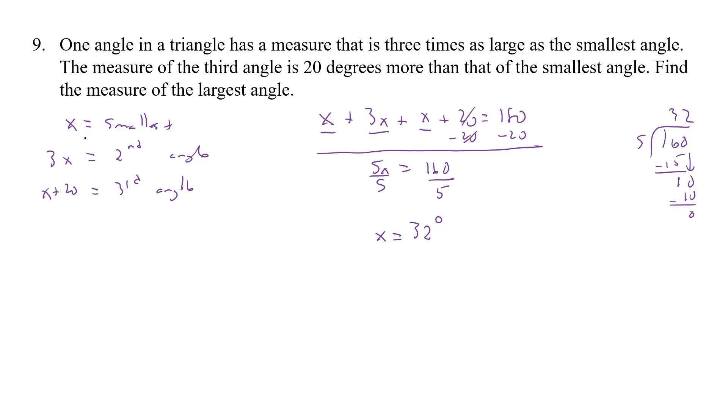So that's the smallest. Now, 32 times 3, that's going to be a 6, 9. So 3x equals 96 degrees. And our last one is x plus 20. That's going to be 20 plus 32. That's going to be 52 degrees.